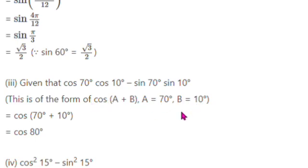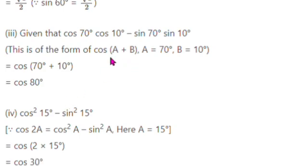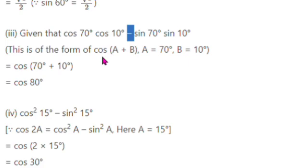Here A is 70 degrees and B is 10 degrees. So applying the formula cos of A plus B, we get cos of 70 plus 10 degree, which equals cos 80 degree.